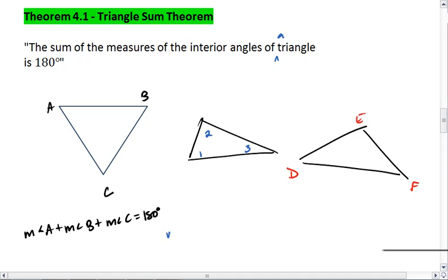Also, the measure of angle 1 plus the measure of angle 2 plus the measure of angle 3 equals 180 degrees. And finally, that the measure of angle D plus the measure of angle E plus the measure of angle F also equals 180 degrees. And this is true for any given triangle.